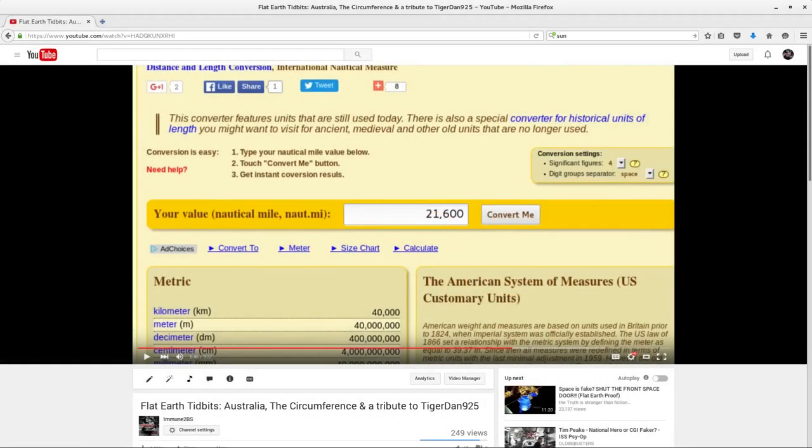Welcome everyone, Immune to BS here. Hey, I had a thought. I was thinking about the video I did called Flat Earth Tidbits where I included the circumference of the earth, and we figured out that the circumference of the flat earth comes out to 21,600 nautical miles, which when converted to English miles comes out to the ever so talented 25,000 miles of the circumference of the globe.